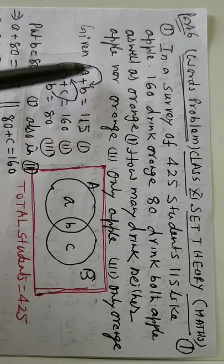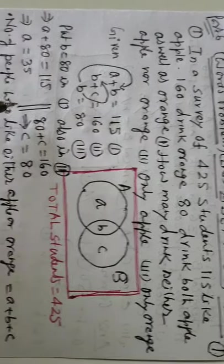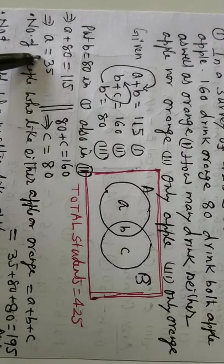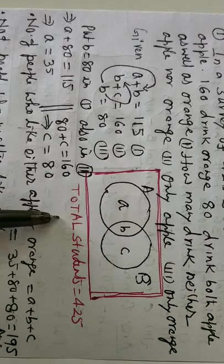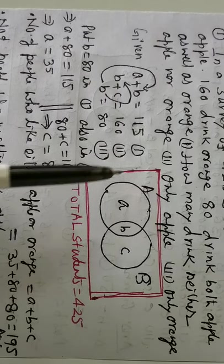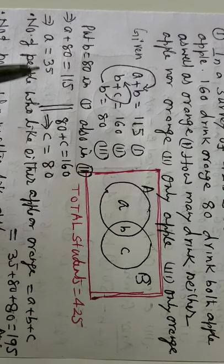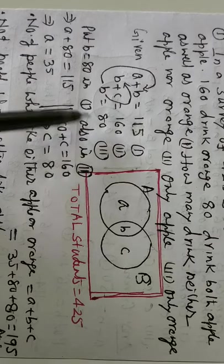So this is 80. Now solving all these, put the value of B at the different place and get the value of A, B, C. A is 35, C is 80. And the total students, total students are given 425. A is 35, B is already 80.